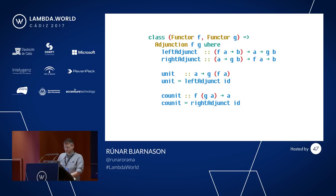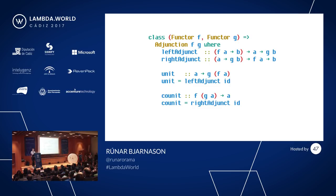If we pass identity to the left adjunct, we get a unit for a monad — we can go from A to G of F of A. It turns out that the composite functor GF is a monad. And if we pass the identity to the right adjunct, taking it across this isomorphism, we get a co-unit for a comonad, which is really cool.